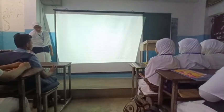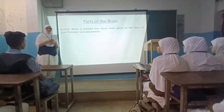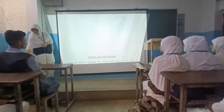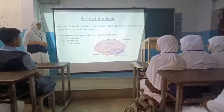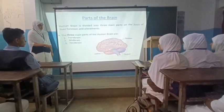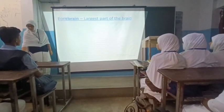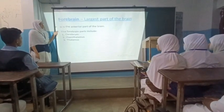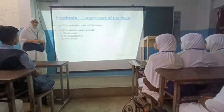Next we will move to study about the parts of the brain. The human brain is mainly divided into three parts on the basis of function and placement. The three main parts of the human brain are forebrain, midbrain, and hindbrain. The forebrain is the first and largest part of the brain; it is the anterior part, meaning it is located in front of our brain. The forebrain parts include cerebrum, hypothalamus, and thalamus.